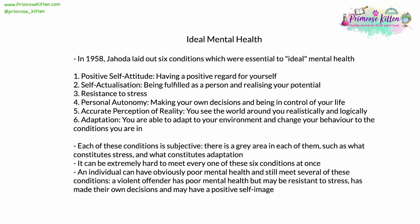Each of these six conditions is subjective, not mathematical data, and there is a grey area in each — what constitutes stress, what constitutes adaptation, what is a positive self-image? It can be extremely hard to meet every one of these conditions at once. Furthermore, an individual can have obviously poor mental health and still meet several of these conditions — for example, a violent offender might be resistant to stress, have made their own decisions, and have a positive self-image.